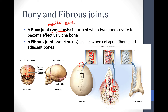The last kind of fibrous joint is the syndesmosis, which we saw in the skeleton. These are collagen fibers that hold two adjacent bones together. In this case we have the tibia and the fibula, and we also see this in the arm with the radius and the ulna.